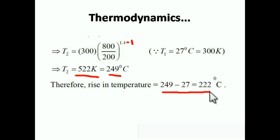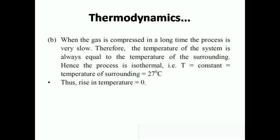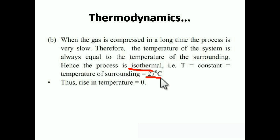For compression over a long time, the process is very slow. When the process is very slow, the temperature change must be zero — the process is isothermal. The temperature of the system always equals the temperature of the surroundings, which is 27°C. Since initial and final temperatures are the same, the rise in temperature is zero.